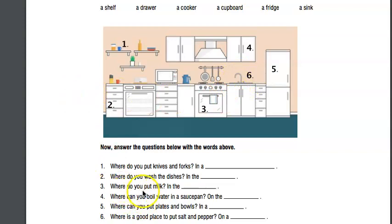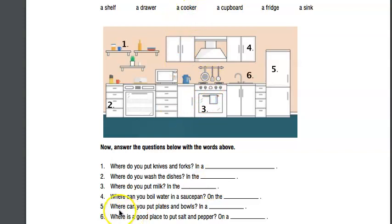Where do you put the milk? That's right - in the fridge. Where can you boil water? In a saucepan, on the cooker. That's right, on the cooker.